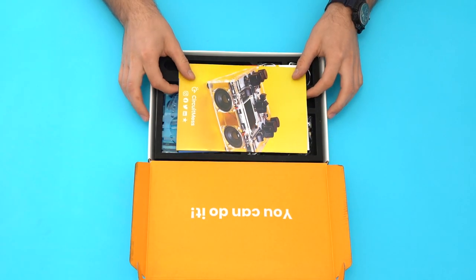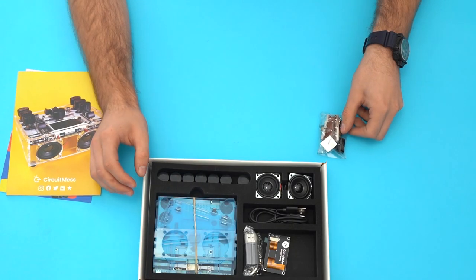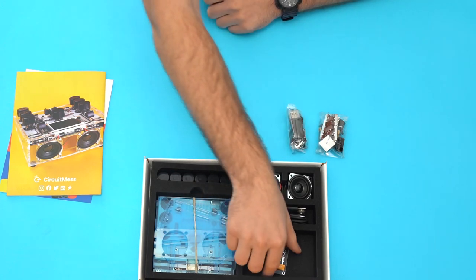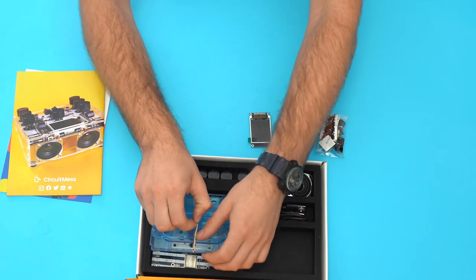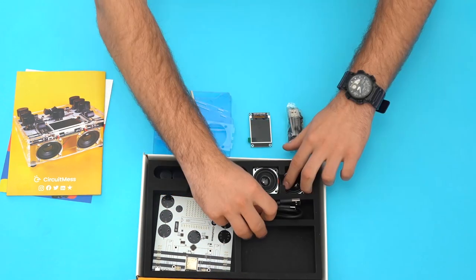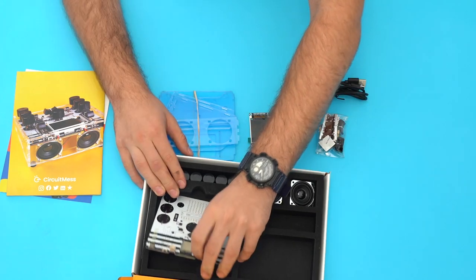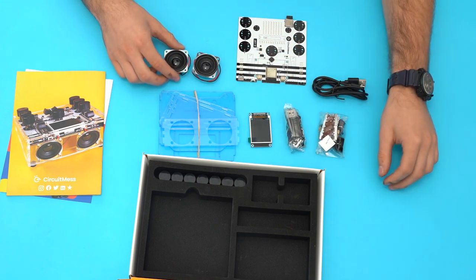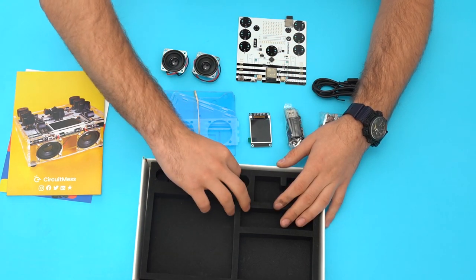In the box there should be a creator's booklet, two plastic bags with all the tiny components you'll need later on, the display board, five acrylic casing parts, a USB-C cable used for powering the device, the main circuit board with the pre-inserted SD card, two speakers, seven round plastic knobs. These will make mixing a lot more pleasant.